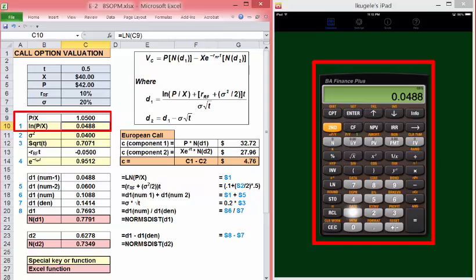Let's store that in register 1. The variance is 0.2 squared. Let's store that in register 2. The square root of time is 0.5 square root. And let's store that in 3. To get the E to the minus RT, we need to do the risk-free rate times time equals.